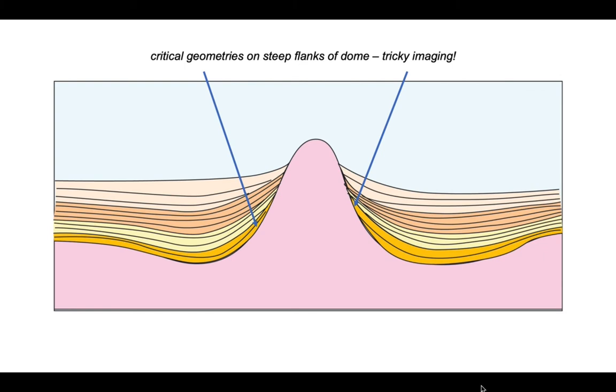These areas can also be important because onlaps and pinch outs can have specific facies, which may be targeted if you're interested in tracking hydrocarbon reservoirs.